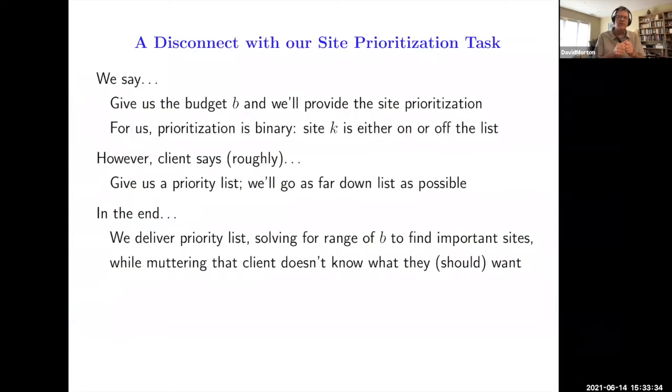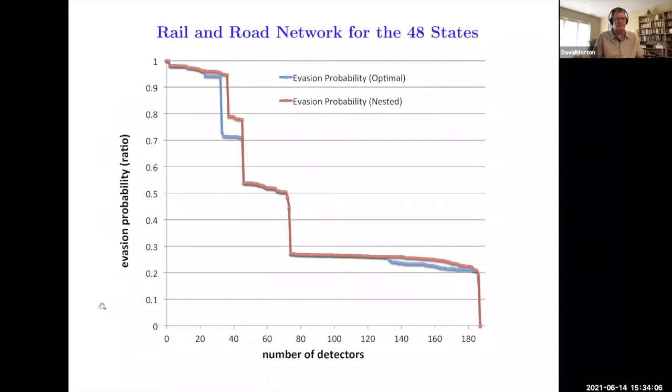So there's a disconnect with our site prioritization task. We tell the sponsor, just tell us what your budget is, and then we'll figure out where to put the specific detectors. But the client says, no, we want a priority list. Give us the most important site and the second most important site and so forth. And we said, it doesn't work that way. But in the case of second line of defense in Russia, they had a good reason for wanting a priority list. And more generally, if you secure infrastructure over time, I think there's a good reason to do this.